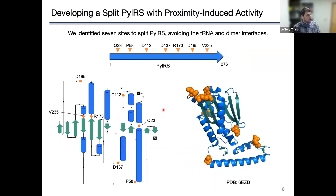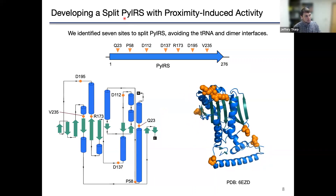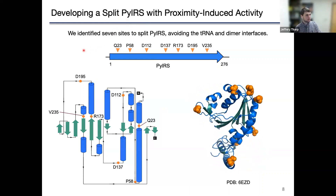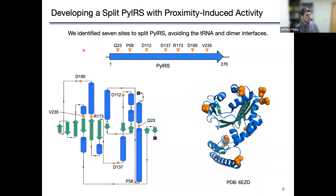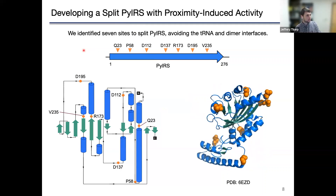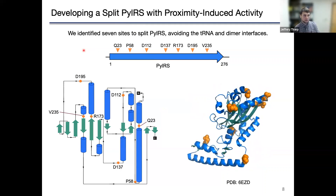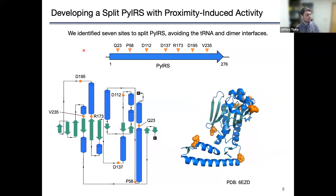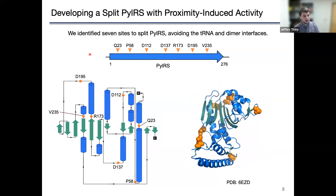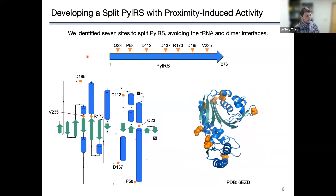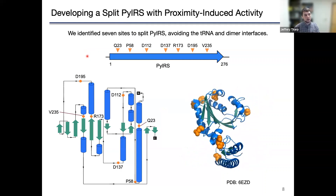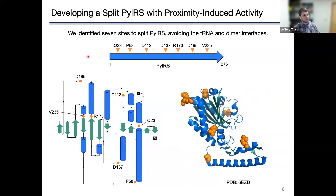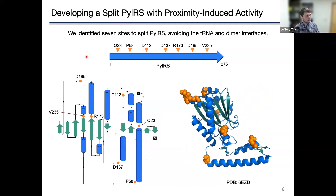The enzyme we chose as a model was the pyrrolysyl tRNA synthetase, or PylRS. PylRS is a widely used enzyme in genetic code expansion for a number of reasons. It's been engineered to recognize over 100 unique unnatural amino acids, and it's orthogonal in both bacteria and eukaryotes, so it can be used to install those amino acids into proteins in a wide variety of model organisms.